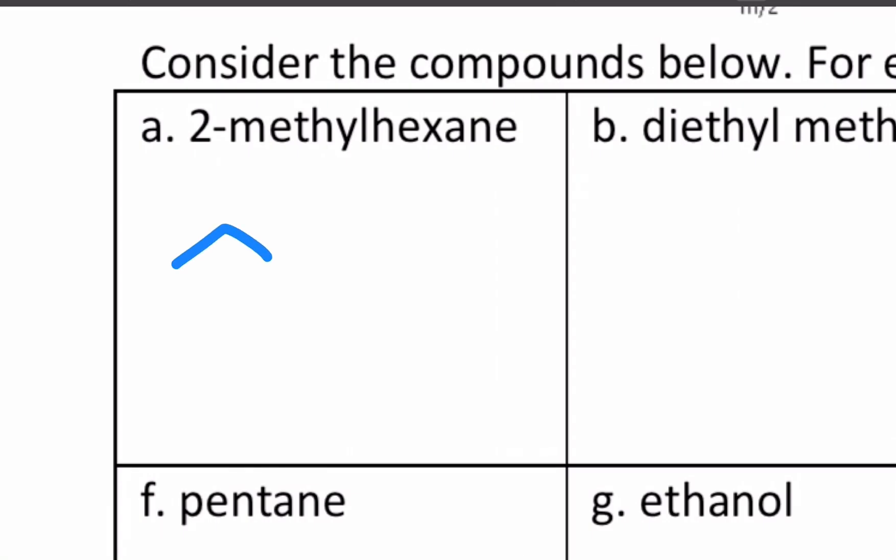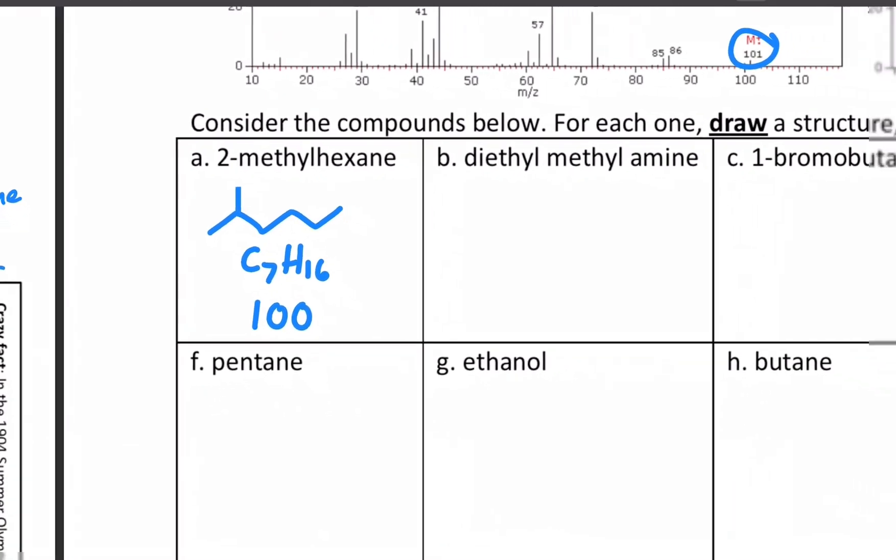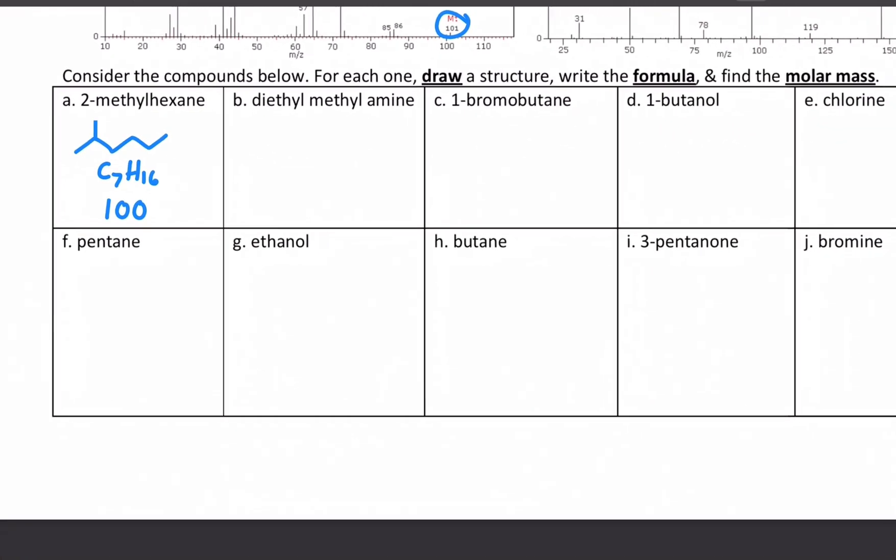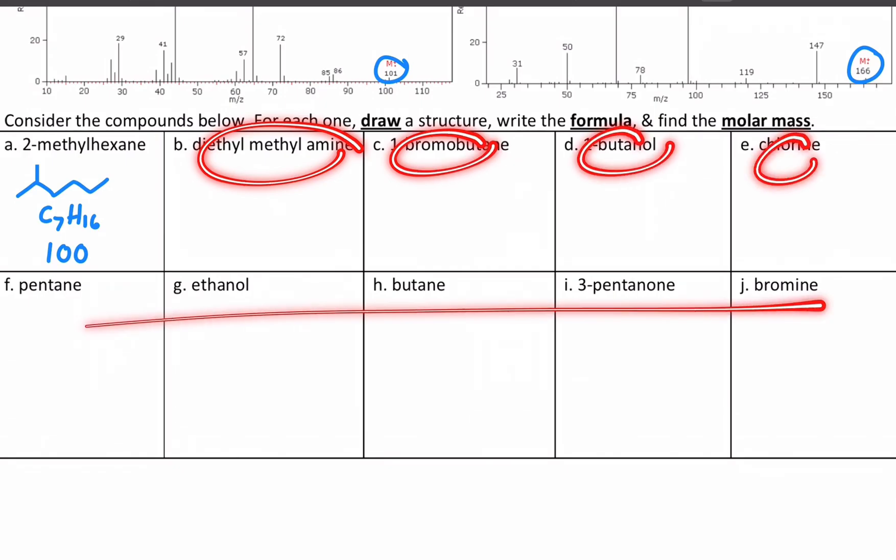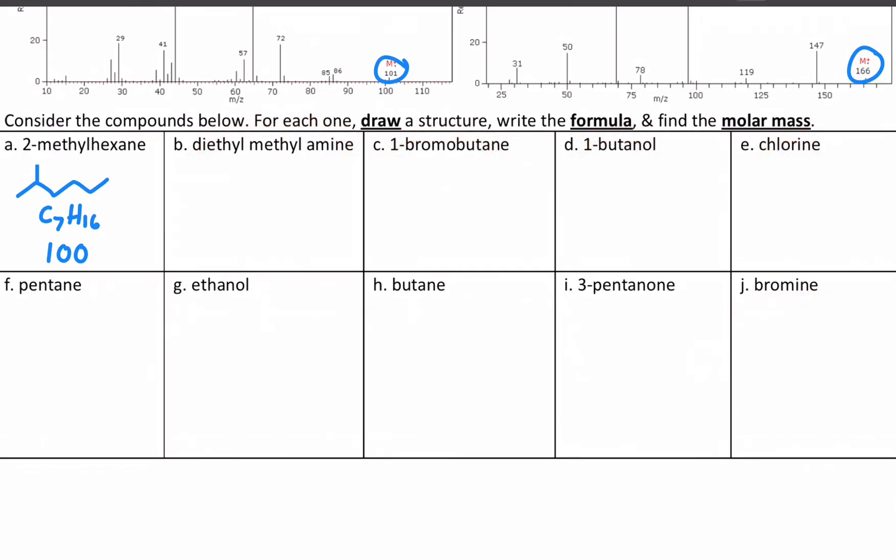So the first one, 2-methylhexane. That's a hexane 2, 4, 6 with a methyl on carbon 2. And if I fill in its molar mass, it would be C7H16, weighing in at 100 grams per mole. So now you have a big task ahead of you. Hit the pause button and go ahead and do the same for all the others, figuring out their structures, formulas, and molar masses.